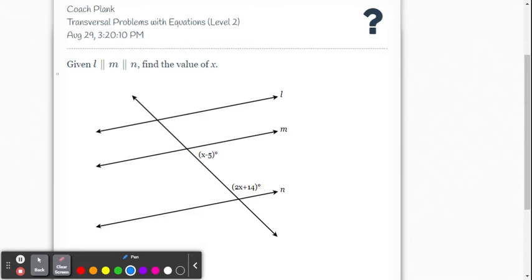So on this one, we have three parallel lines, but we're really looking at the two with the transversal there. Those are just same side interior angles, or co-interior angles. So we know that their relationship is they are supplementary when the lines are parallel.